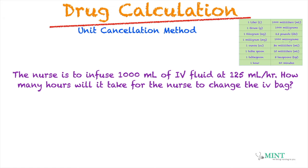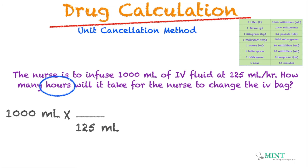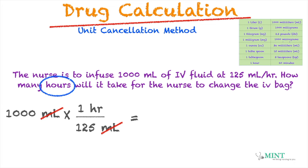The nurse is to infuse 1,000 ml of IV fluid at 125 ml per hour. How many hours will it take for the nurse to change the IV bag? The problem is looking for hours. We write 1,000 ml multiplied by 1 hour over 125 ml, canceling ml and leaving hours. The math: 1,000 times 1 divided by 125 gives us 8 hours.